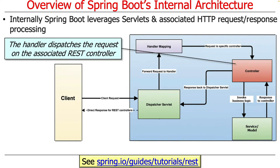The handler takes a look at the data structure it got, which contains the contents of the request, and figures out which controller handles that request. You will have written a controller, and it will automatically register using the inversion of control model we talked about before — it will have registered with the Spring framework. That's where the request is going to be sent. The controller is responsible for taking the contents of the request, which are typically in string format because they're going across the network, and potentially some JSON as well.